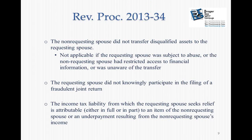The most important threshold condition: the income tax liability must be attributable in whole or in part to an item of the non-requesting spouse or an underpayment resulting from the non-requesting spouse's income. For example, if the husband had $100,000 of self-employment income and the wife had $100,000 of W-2 wages, and no tax was paid, the non-payment is attributable 50% to each. The wife would only be allowed relief with respect to 50% of the liability.